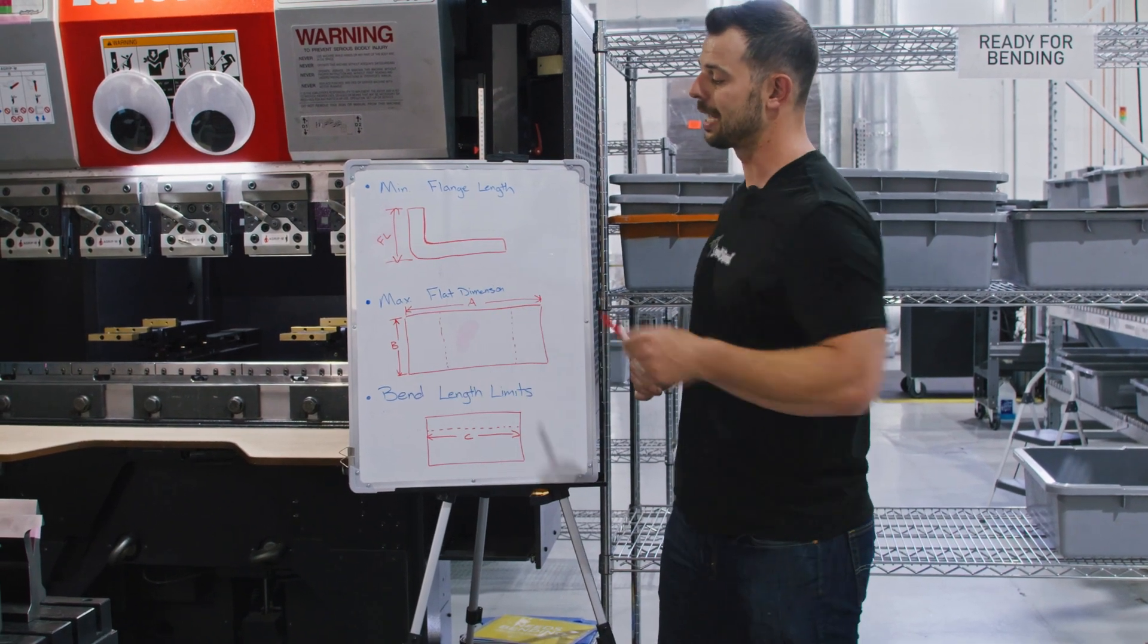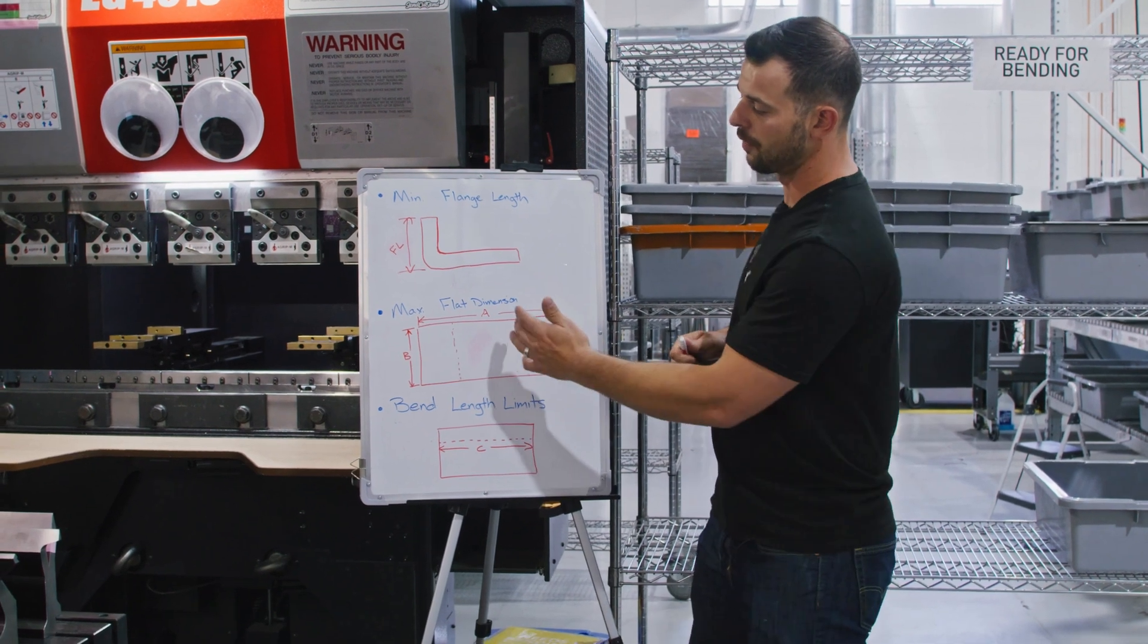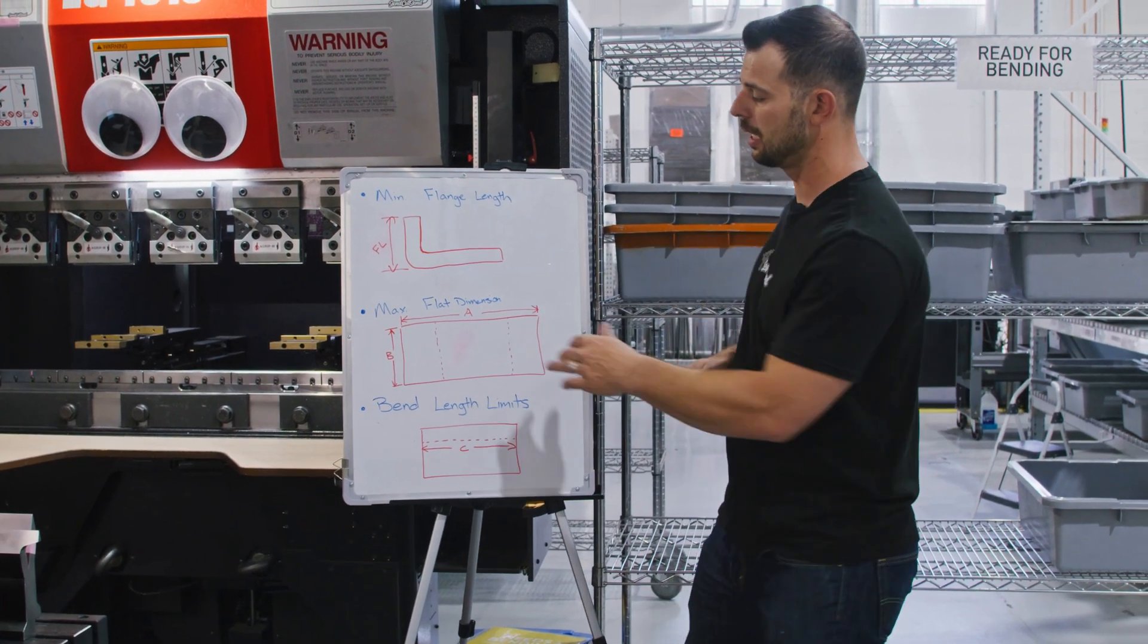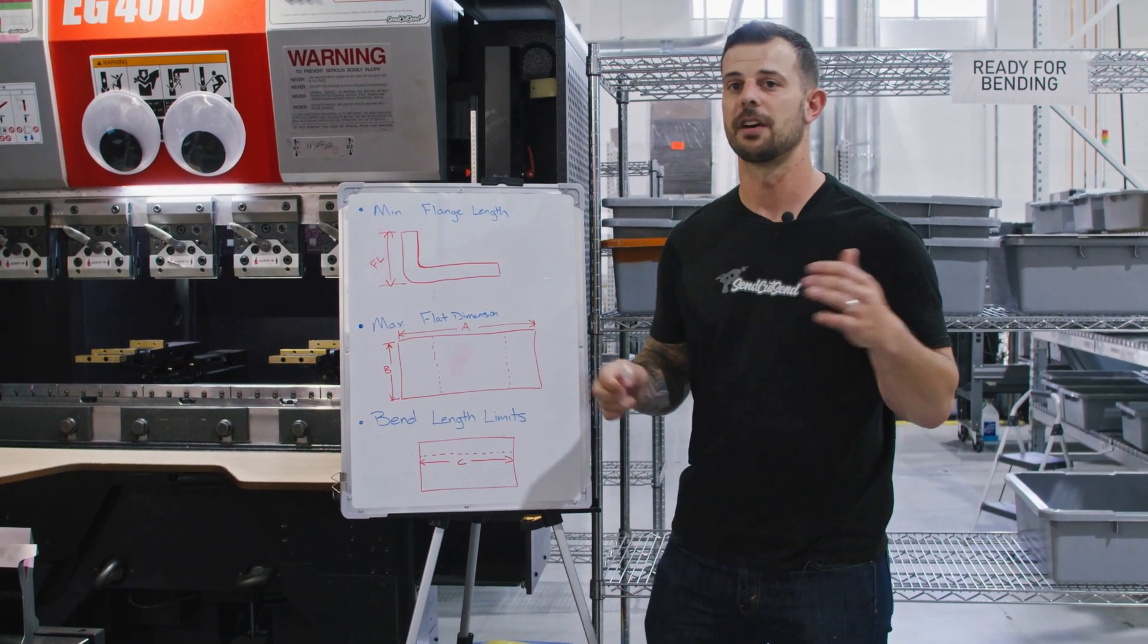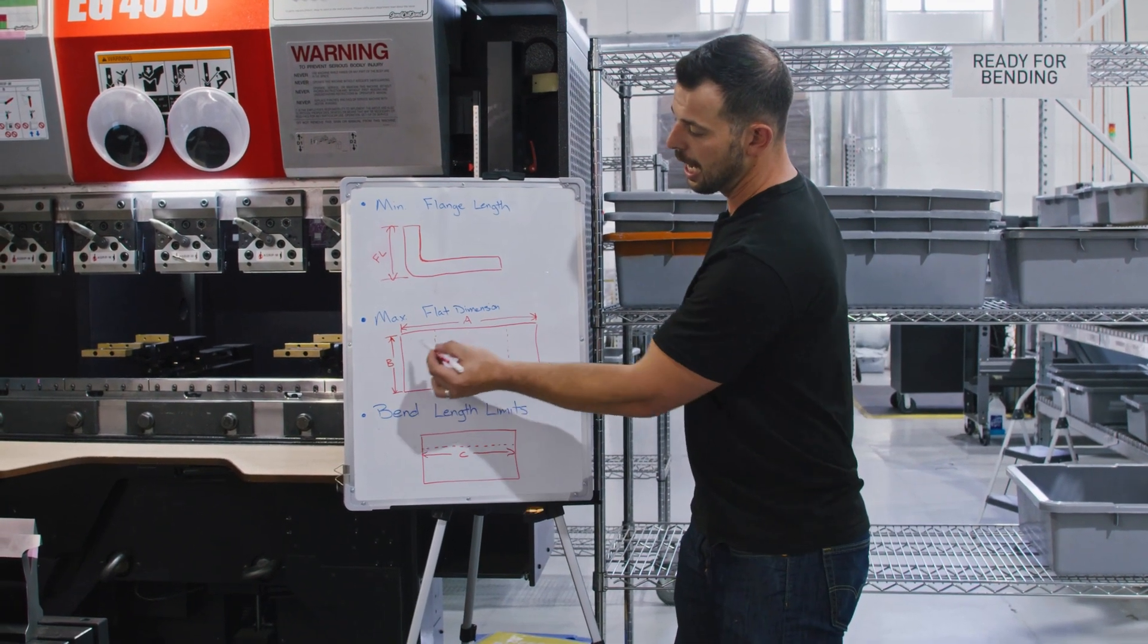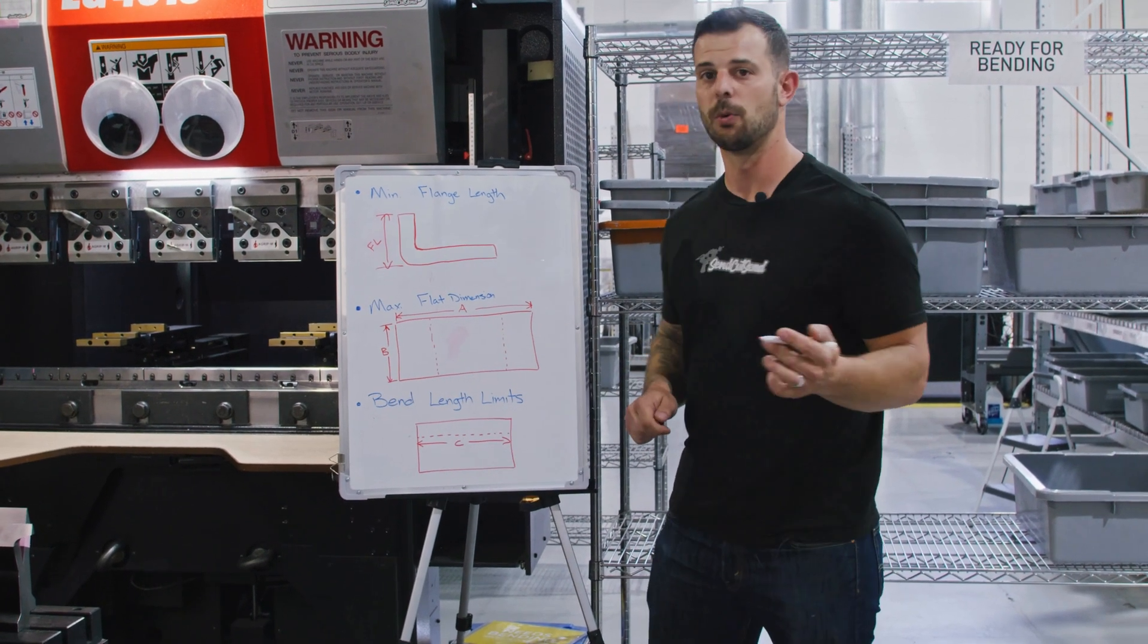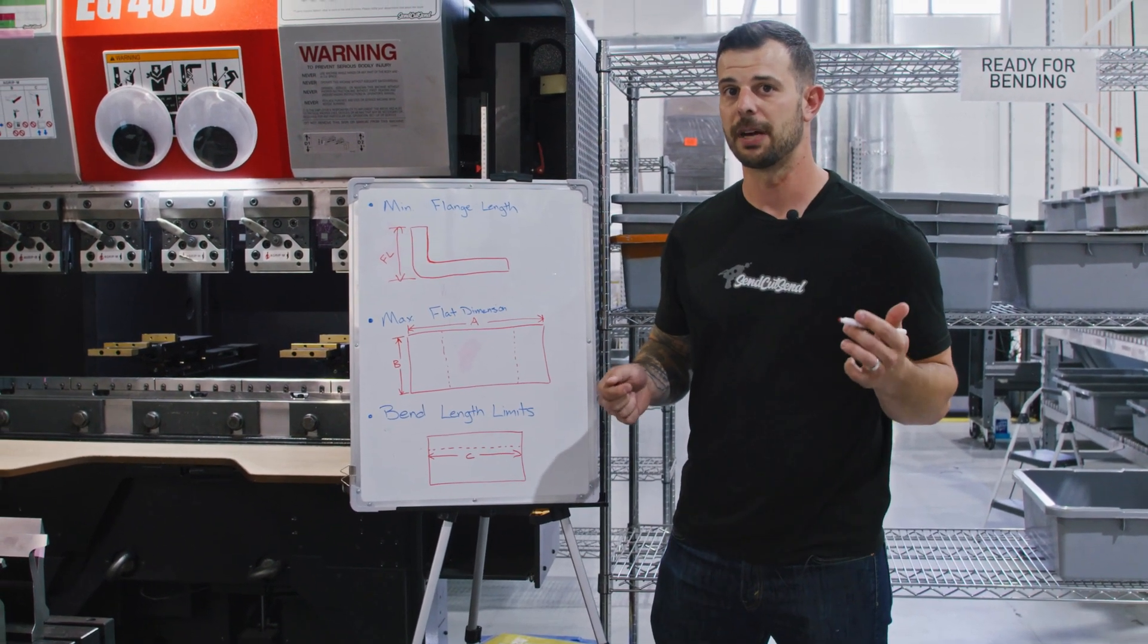Next, let's talk about the max flat dimension. This is going to be referencing our max flange length. If we go to our website again, we're going to see that we have a max flat dimension of 30 by 30. But what does that mean? What that means is that in the flattened out version of your part, A and B, neither one can be greater than 30 by 30 inches.